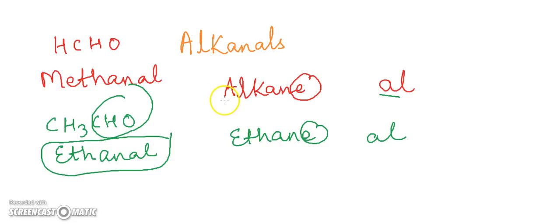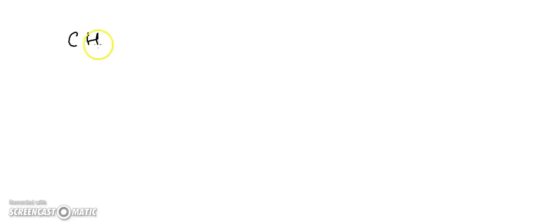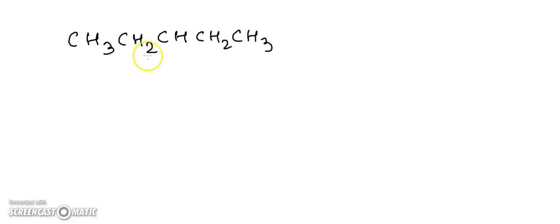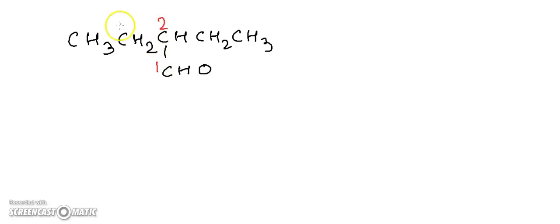For example, consider a structure CH3–CH2–CH2–CH2–CHO with a substituent. According to the IUPAC system, we find the longest chain, ensuring the functional group gets number 1. Numbering gives 1, 2, 3, and 4 — so there are four carbon atoms in the longest chain. The name is 2-ethylbutanal.